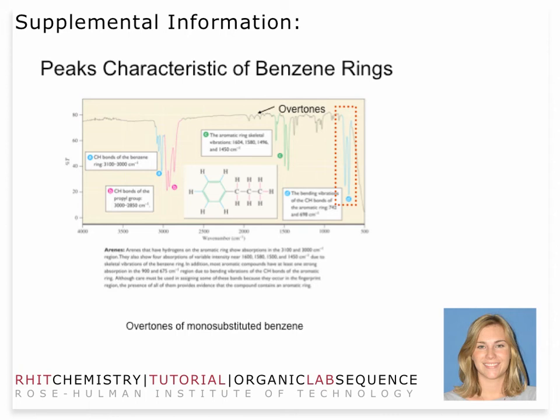Anytime you have a benzene ring, there are some characteristic absorptions around 3000 because they have CH bonds. They also have what are called overtones, observed right around 1500 — shown in green on this slide. And there are some other signatures: bending modes around 800 wave numbers, shown in blue in the dotted orange color box on this slide. Those are actually pretty intense peaks, so they can be useful in interpretation.